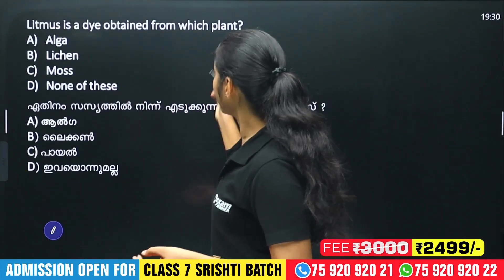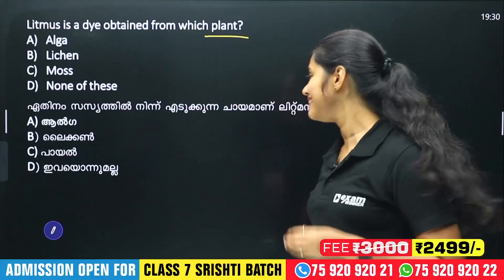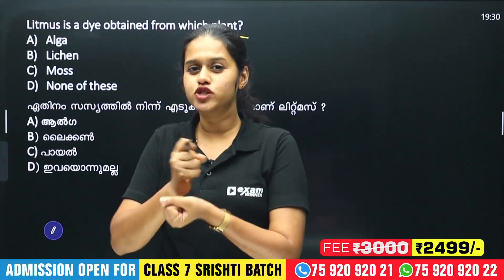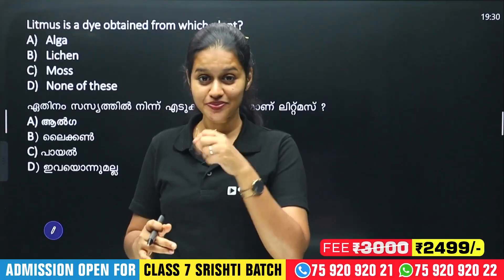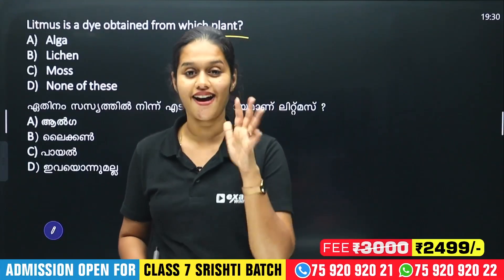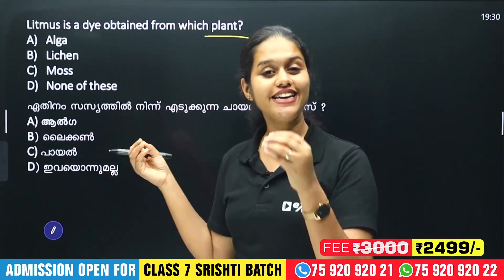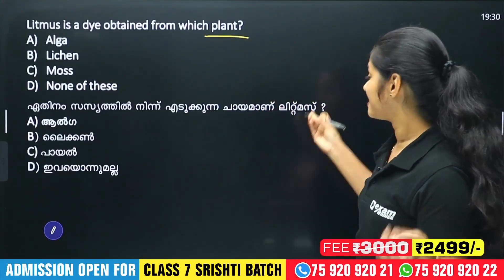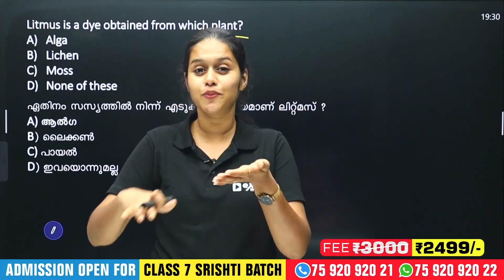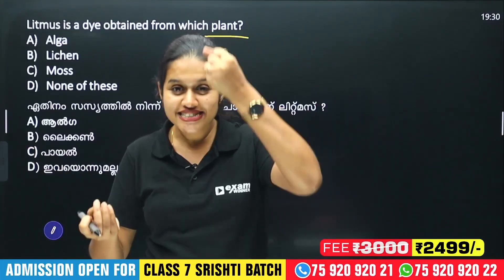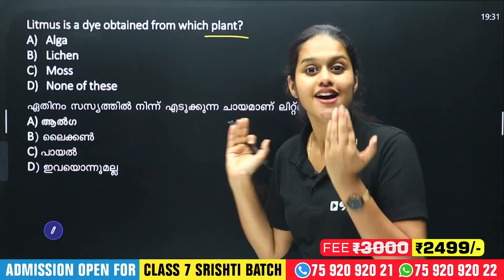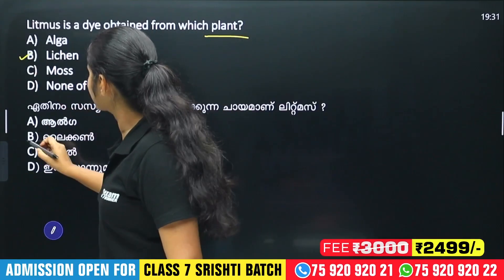Litmus is a dye obtained from which plant? Litmus is obtained from Lichens. Lichens are extracted, so the answer is Option B — Lichens.